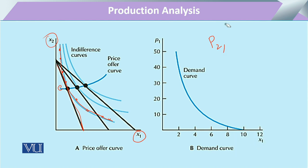Keeping the price of the other commodity — p2 — constant, and also keeping the income of the consumer constant, we monitor only the change in the price of commodity x1. Now if the price of x decreases, the budget line moves slightly to the right side. When it moves to the right, it provides an opportunity for the consumer to move to a higher indifference curve, establishing a second equilibrium point.